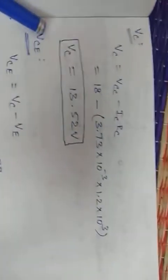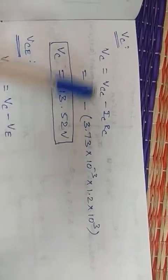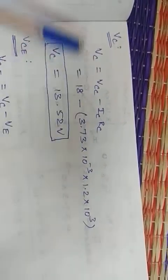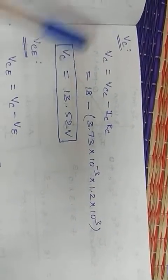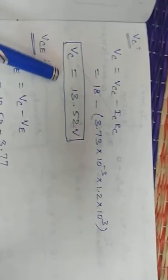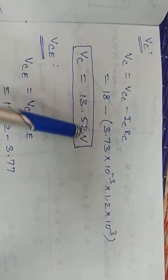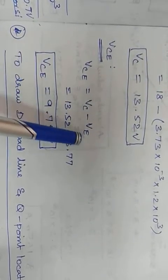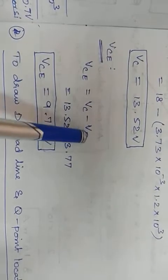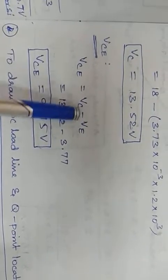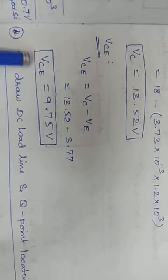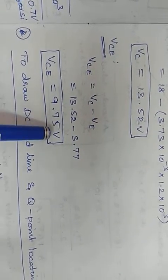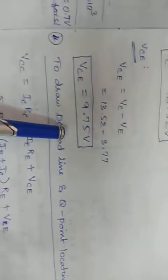VC = VCC − IC × RC. Using the same formula as approximate analysis, VC = 13.52V. VCE = VC − VE. Substituting the calculated values, VCE = 13.52 − 3.77 = 9.75V. The problem is solved.